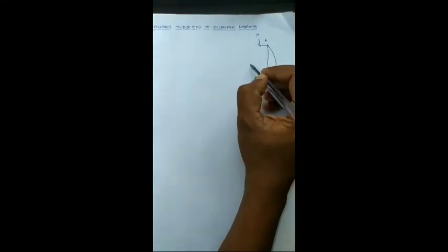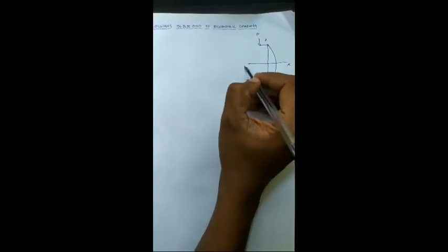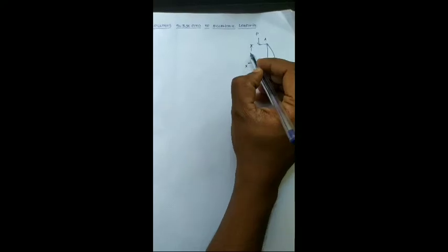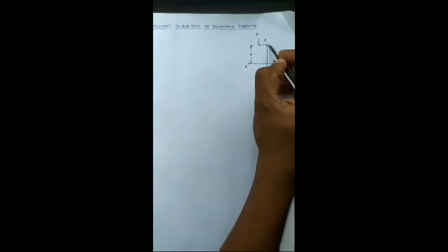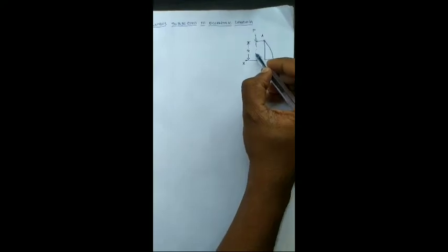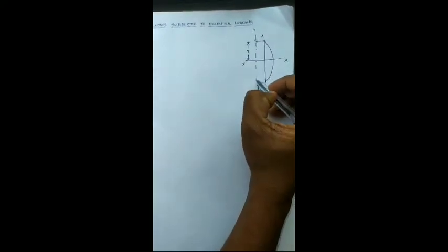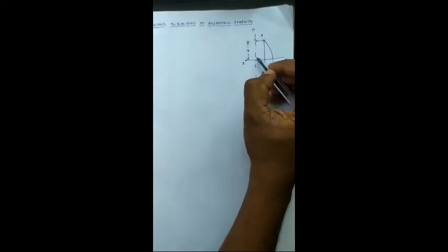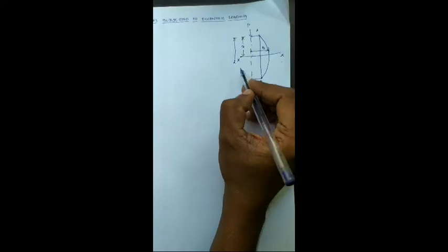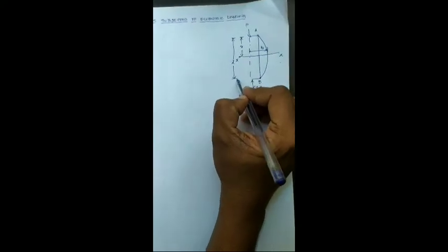Now we consider a section XX which is at a distance of small x from the end A. Similarly, the deflection of the column at that particular section will be small y, denoted by small y, and the length of the column will be L.